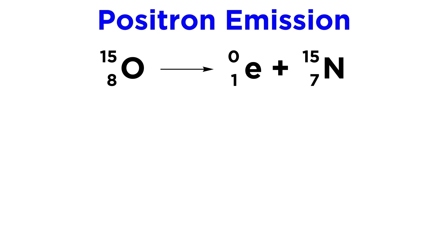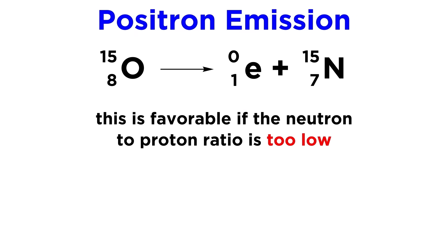Next will be positron emission, and we can see here oxygen-15 emitting a positron to become nitrogen-15. This is essentially the conversion of a proton into a neutron, and it will occur if the neutron to proton ratio is too low. The conversion of a proton into a neutron will help balance this ratio.